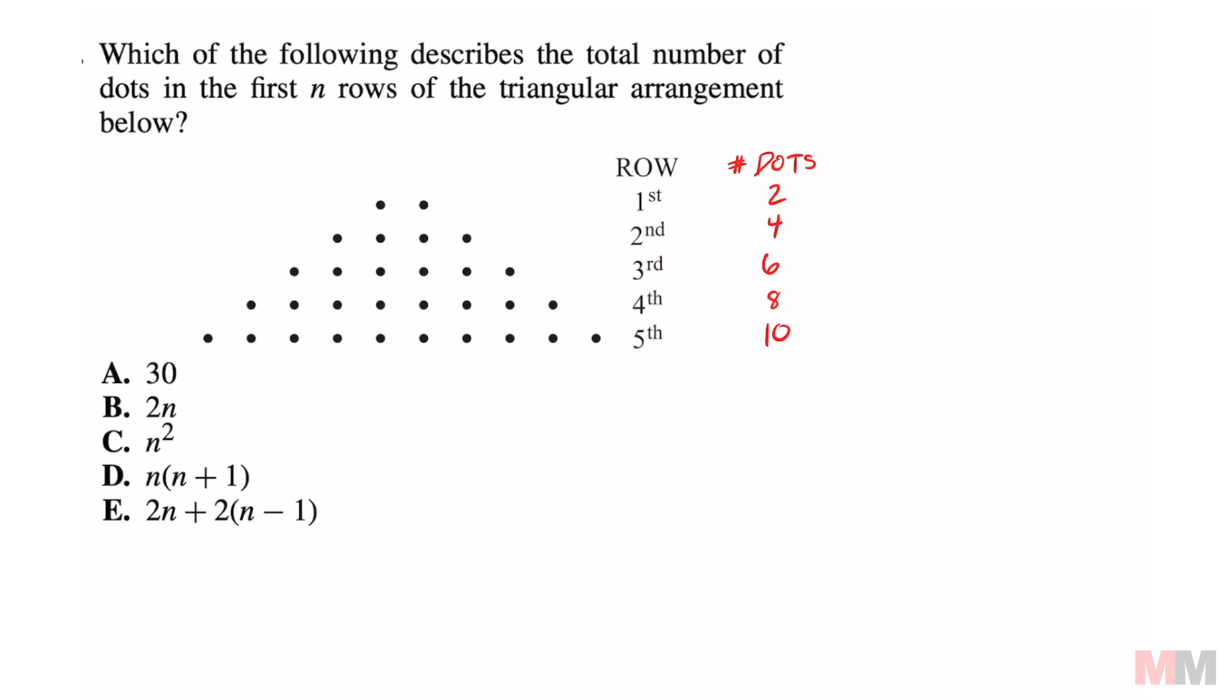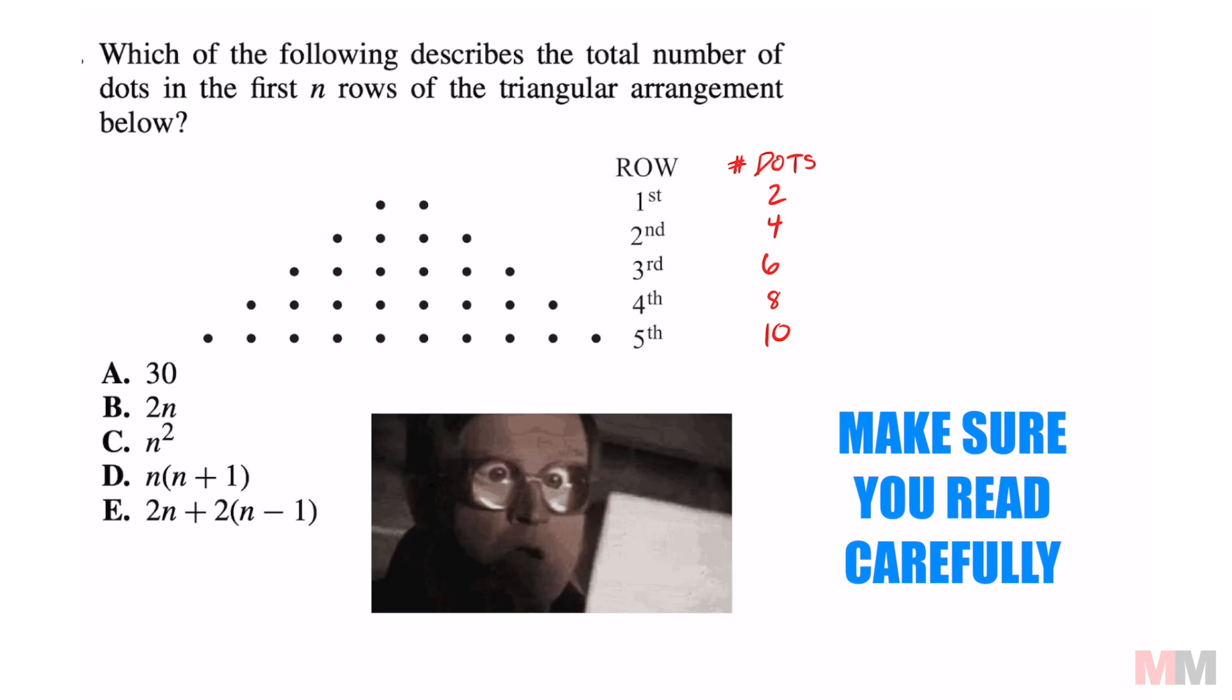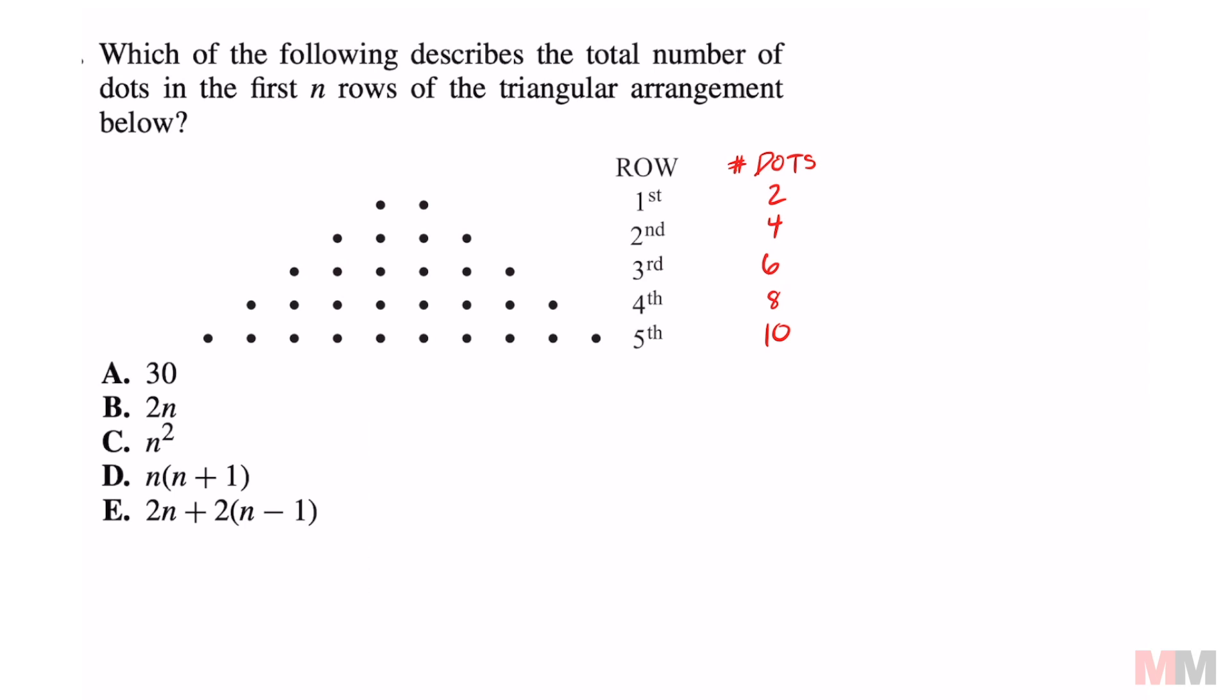At this point, you might be tempted to choose letter choice B and call it quits because this is the expression that matches the sequence right here. But you've got to read the fine print. This is all about reading it carefully. We're trying to find the expression to match the total number of dots in the first n rows. That is different from counting the number of dots in each row.